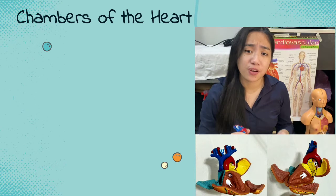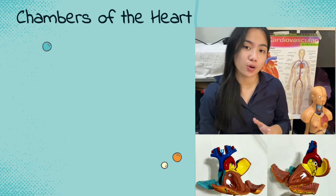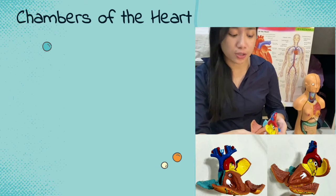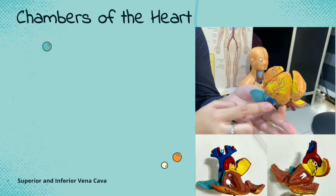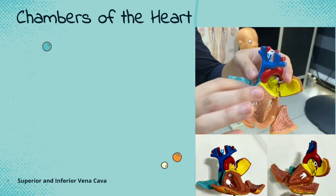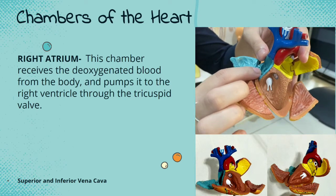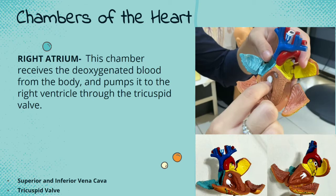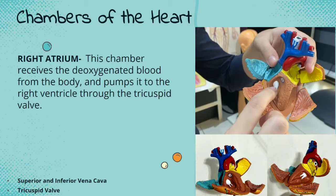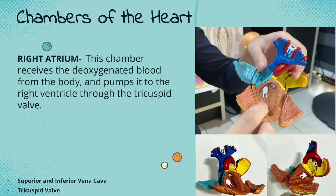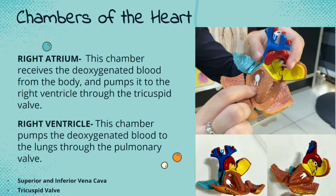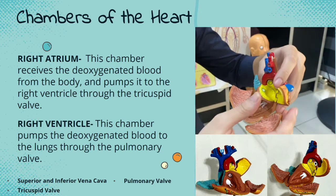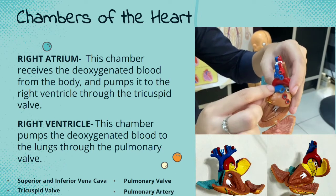In order to explain the function of the parts of the heart, we have to go through the whole cycle. The deoxygenated blood returns to the heart through the superior and inferior vena cava. The right atrium receives the deoxygenated blood and flushes it to the right ventricle through the tricuspid valve. Then the right ventricle pumps the deoxygenated blood to the lungs through the pulmonary valve, and the blood then leaves the heart through the pulmonary artery.